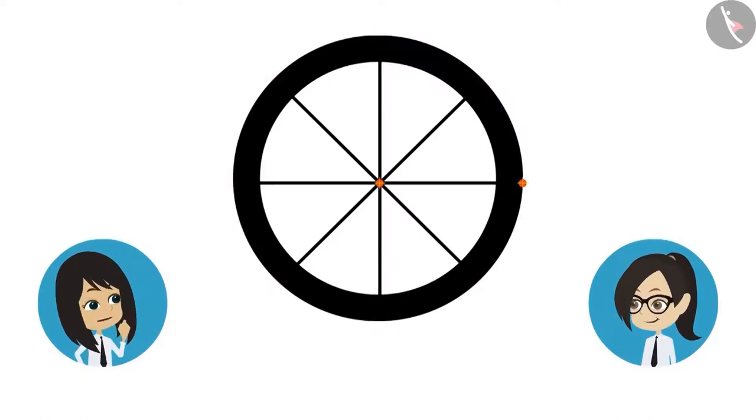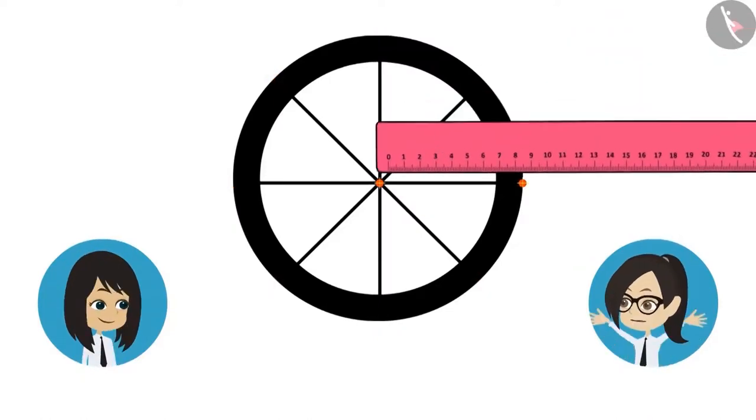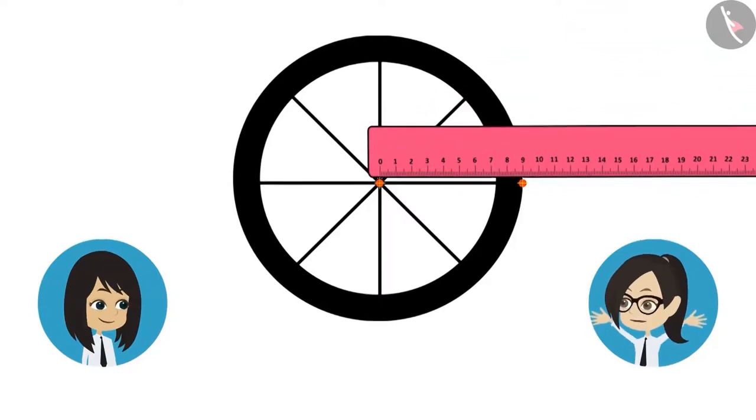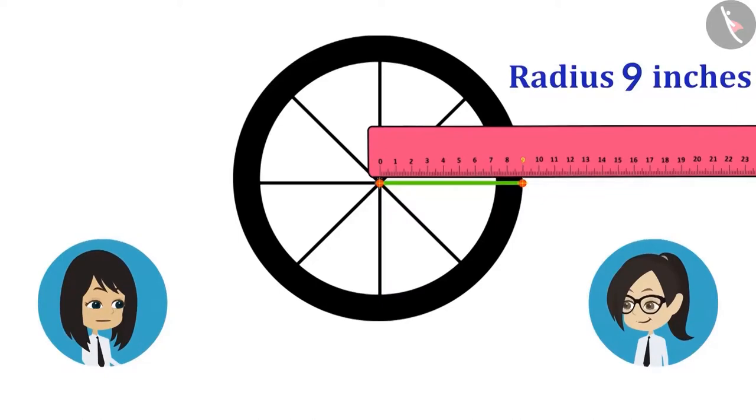Let's measure up to this point. Now let's measure the distance between these two points using a scale. Radius of the wheel of bicycle is 9 inches. Let's now measure its diameter as well.